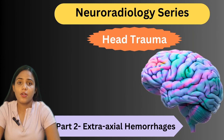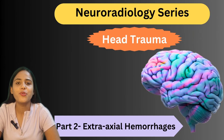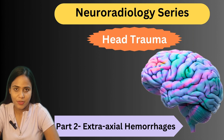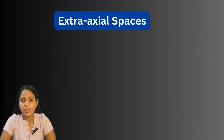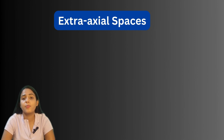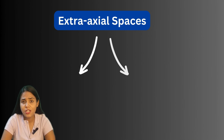Today we will talk about extra-axial hemorrhages. This is part 2 of a series called head trauma where we will discuss things pertaining to neuroradiology. Let's define the term extra-axial spaces. These extra-axial spaces are locations outside the brain parenchyma, and bleeding within these extra-axial spaces is known as extra-axial hemorrhage.